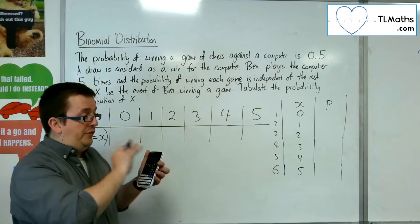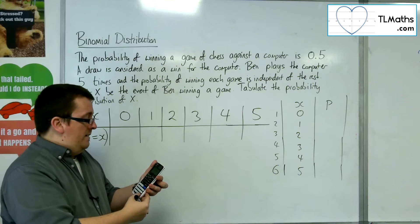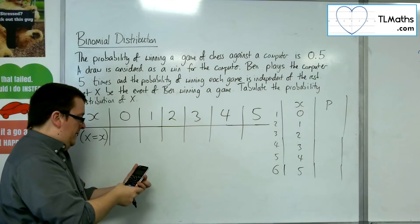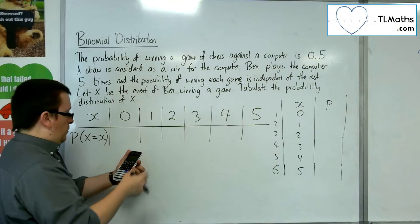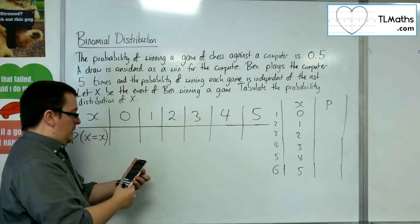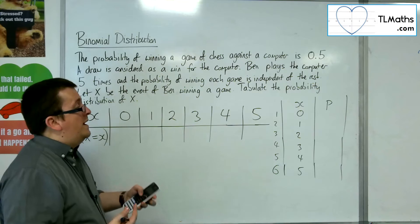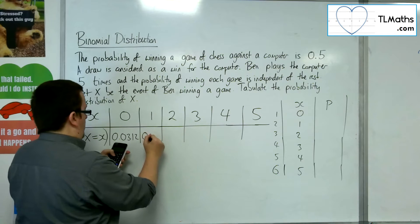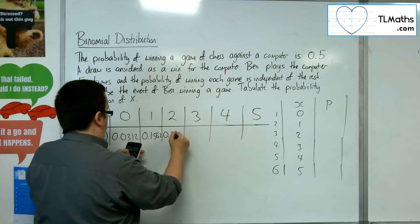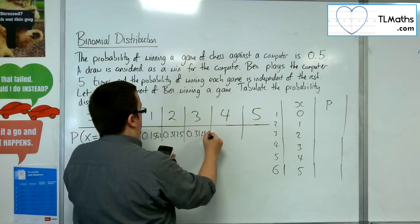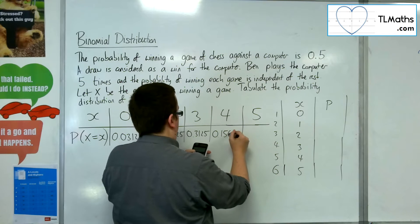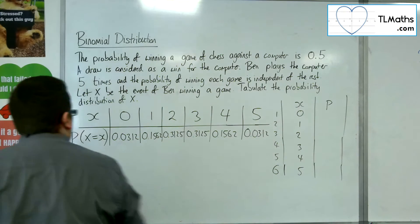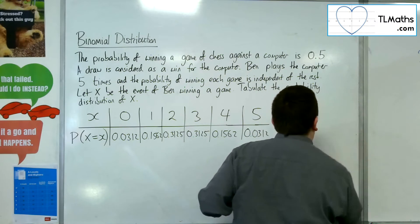Now once you've done that, your cursor will be at the seventh row. Press equals again, and then you want to tell it you want n to be five, and you want the probability of success to be 0.5. Then press equals again, and what it will do is it will populate the right-hand side of your table. So what you'll get is 0.0312, 0.1562, 0.3125, 0.3125, 0.1562, and 0.0312. So those are the probabilities.